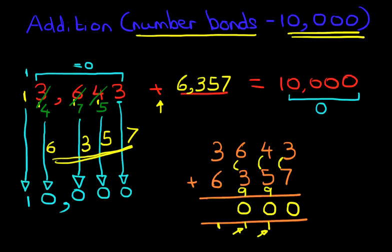6 plus 3 is 9 plus the 1 is 10. 0 here and the 1 here. On to the thousands. 3 plus 6 is 9 plus the 1 is 10. We've got nothing here, nothing here, but we have got one here for the 10,000. And there we have it. The answer is 10,000. So therefore, what we came up with, 6,357 is correct. And that is addition of number bonds to 10,000.